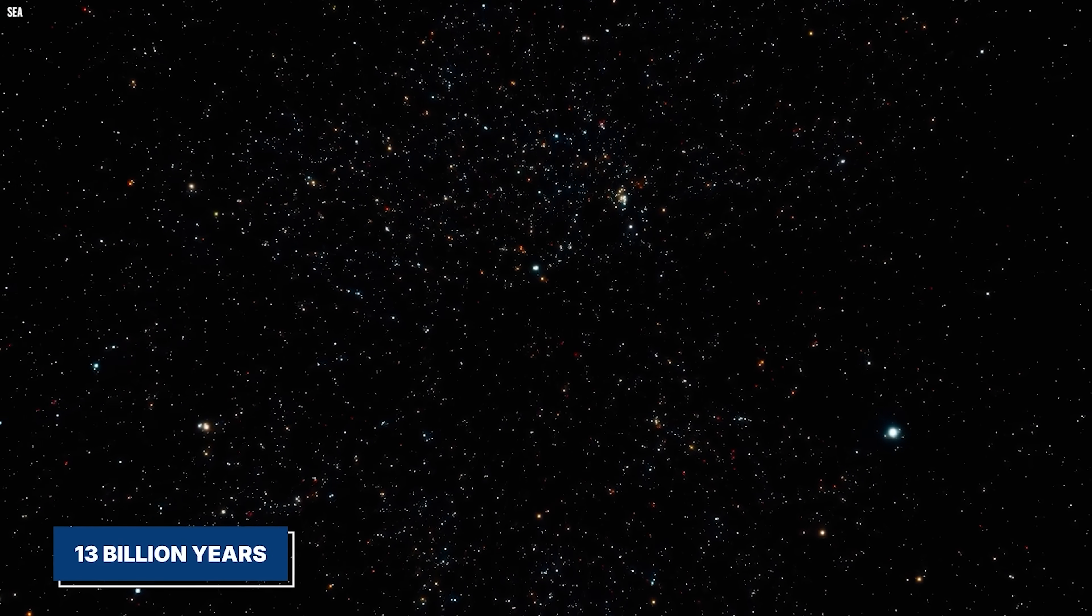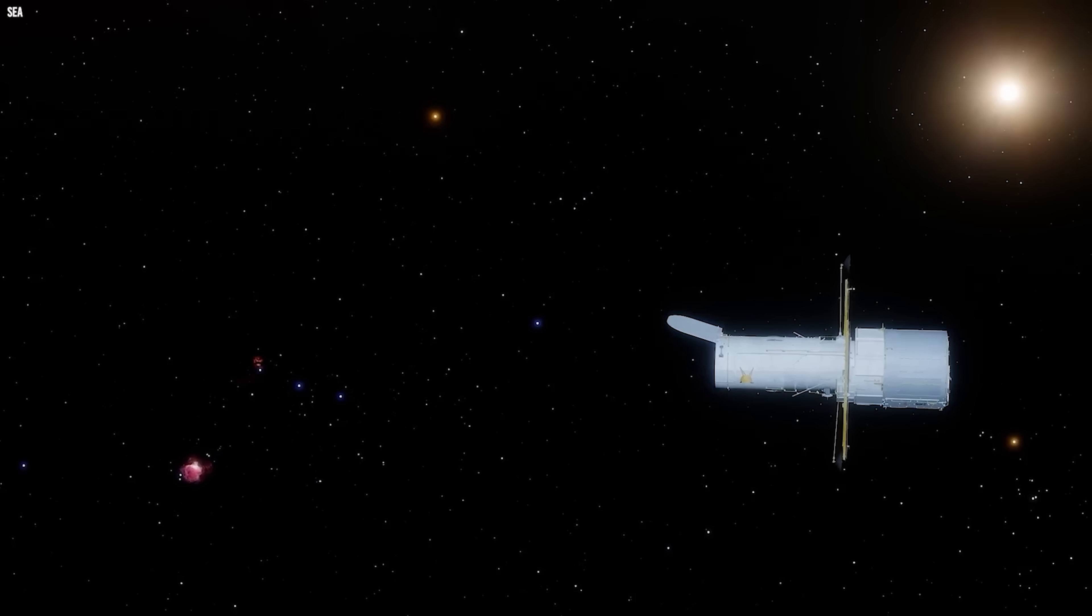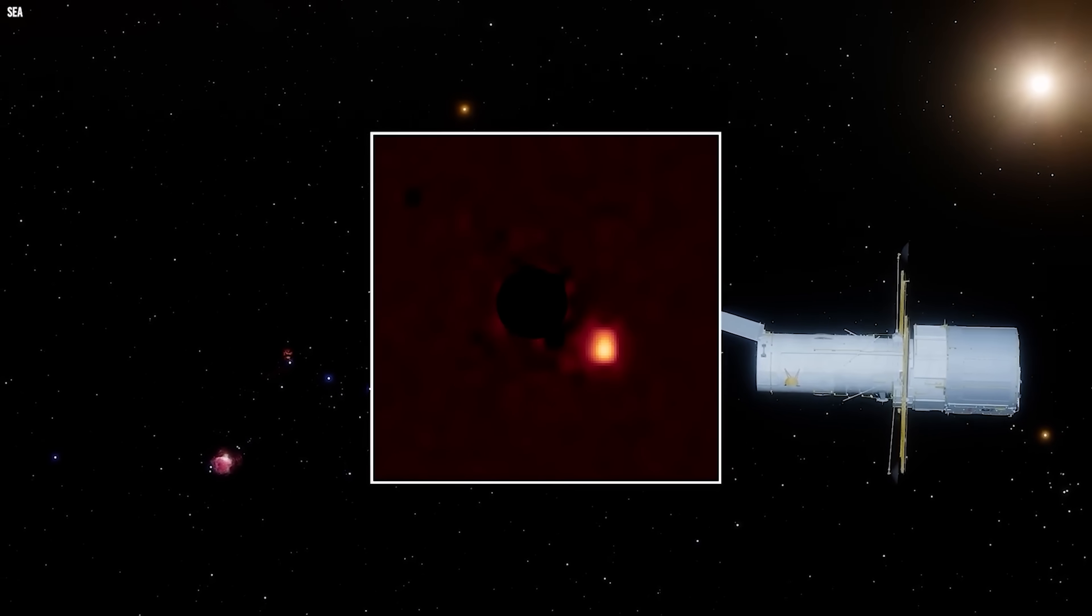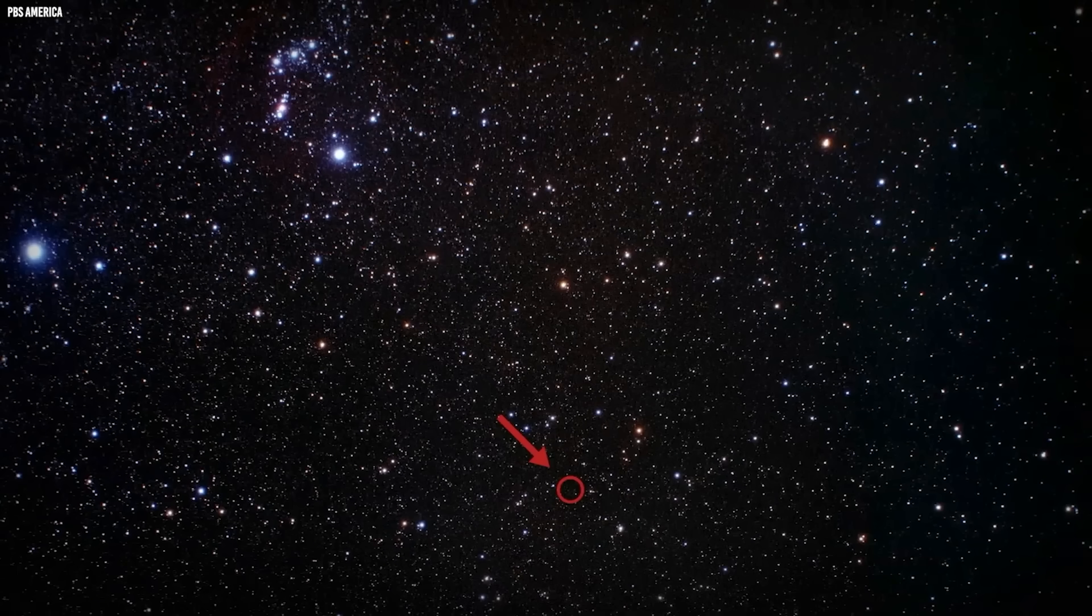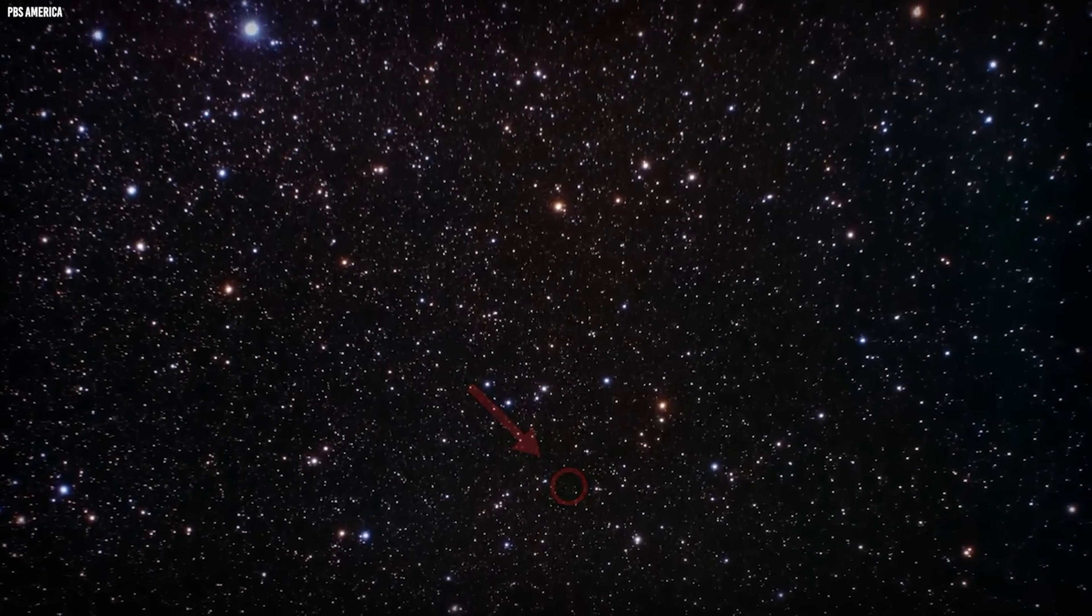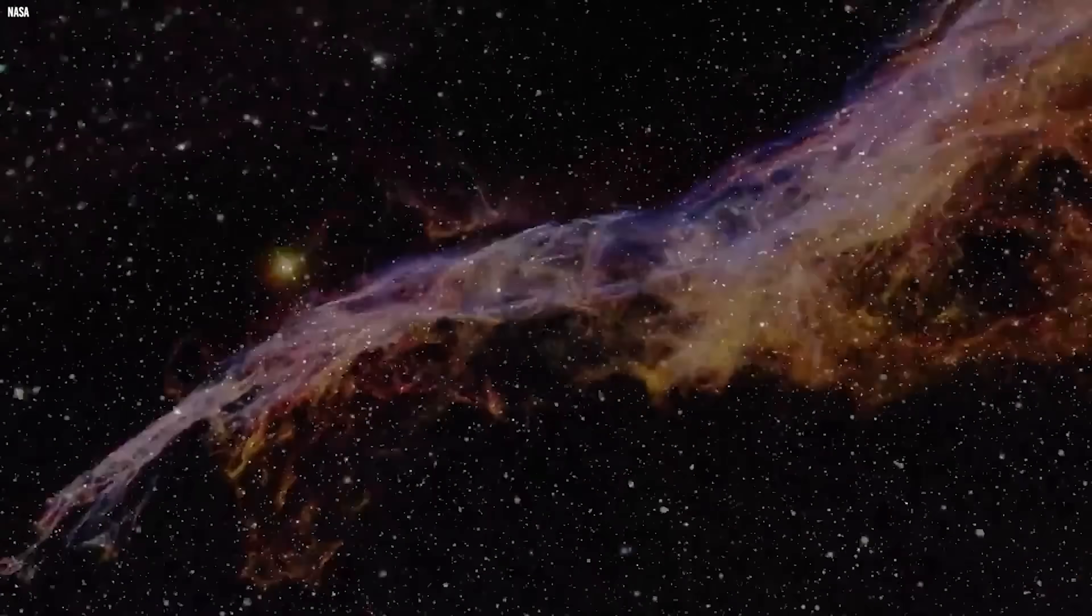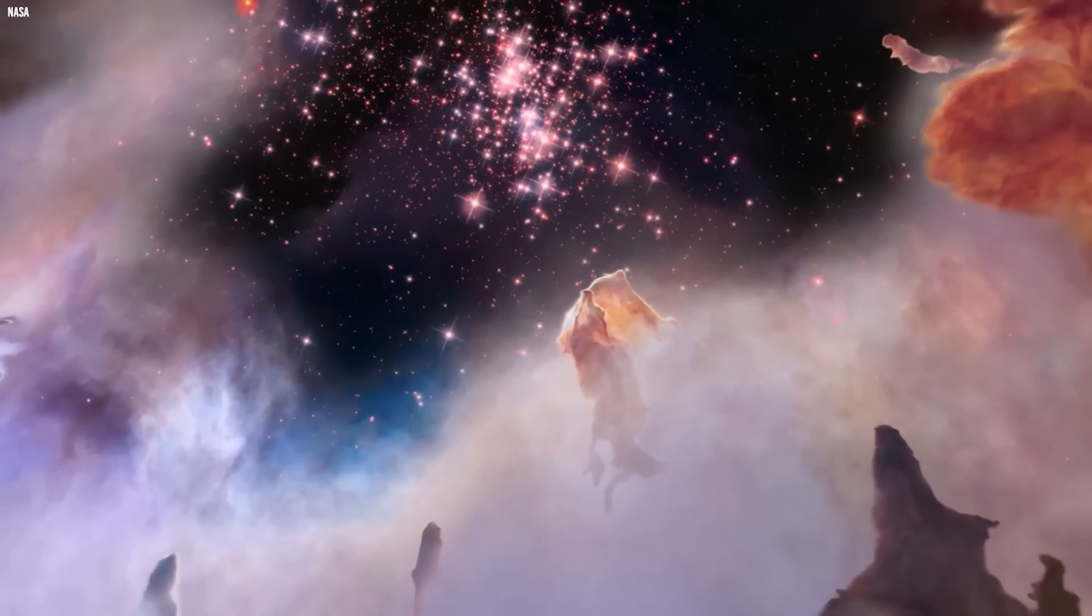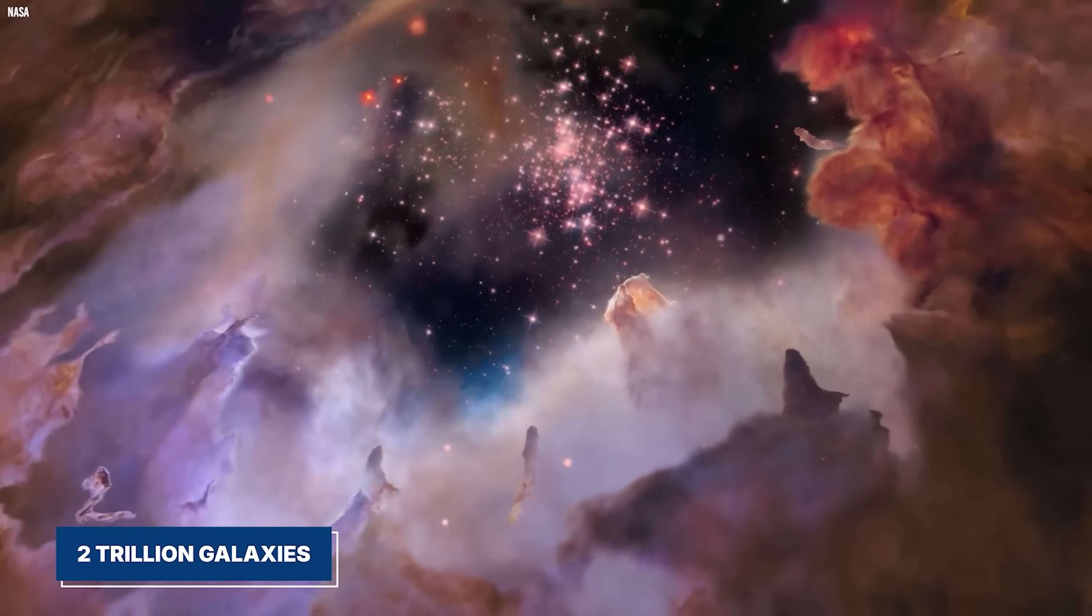Each tiny dot of light wasn't a star, it was an entire galaxy, filled with billions of stars of its own. That single image reshaped astronomy and led scientists to estimate that the observable universe may contain as many as 2 trillion galaxies.